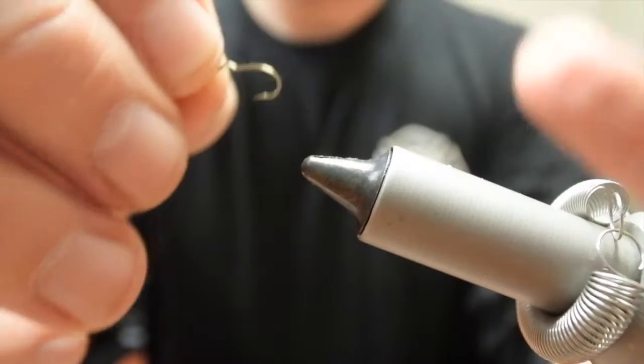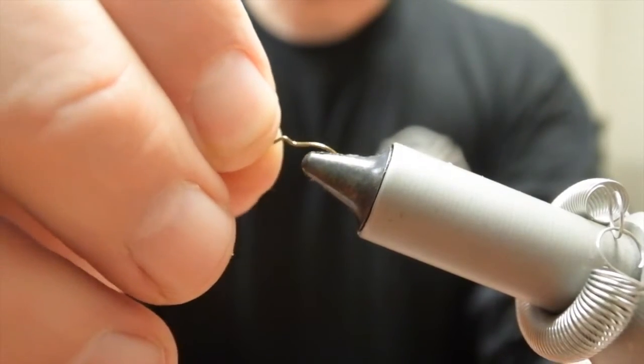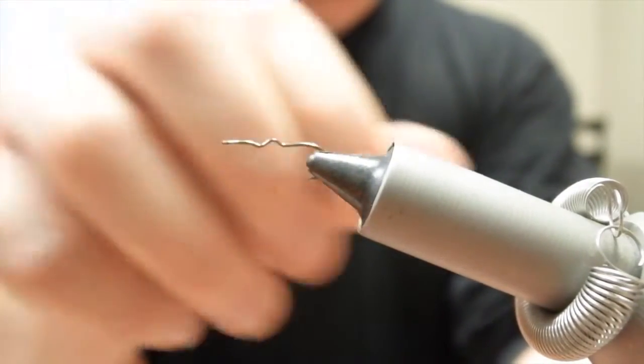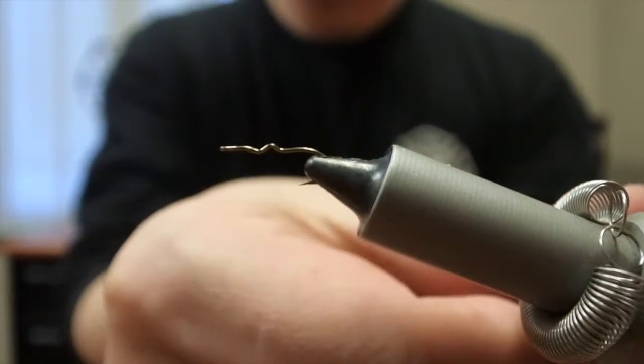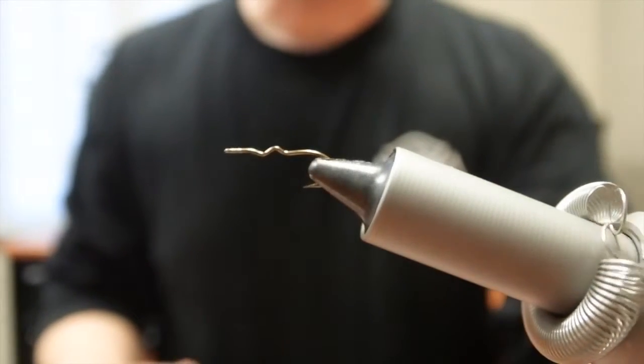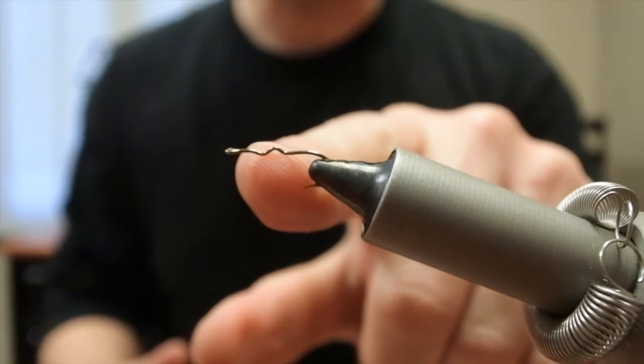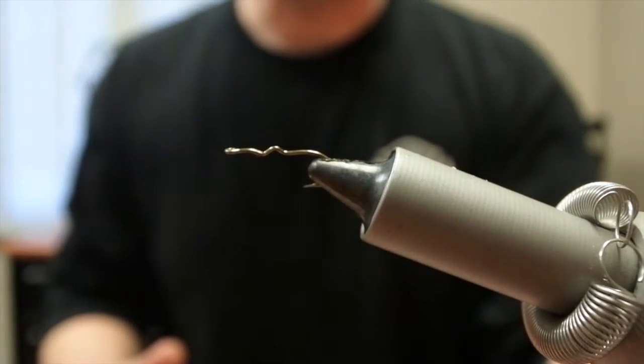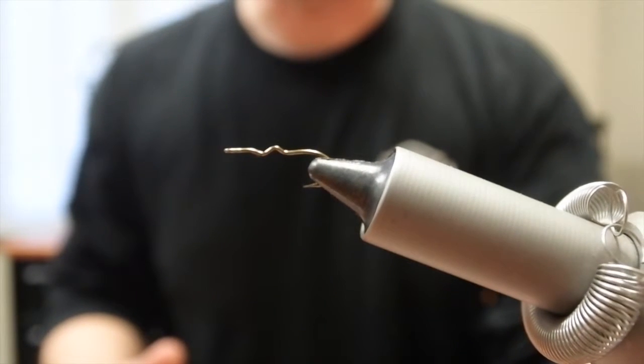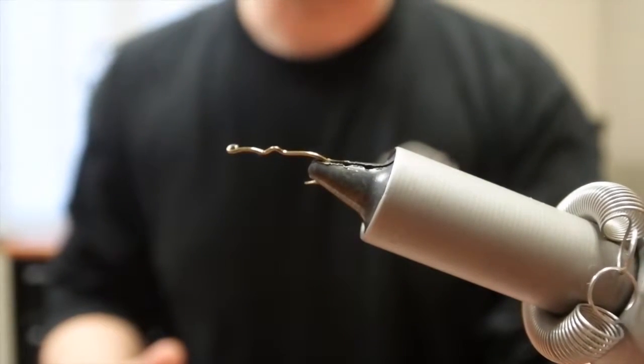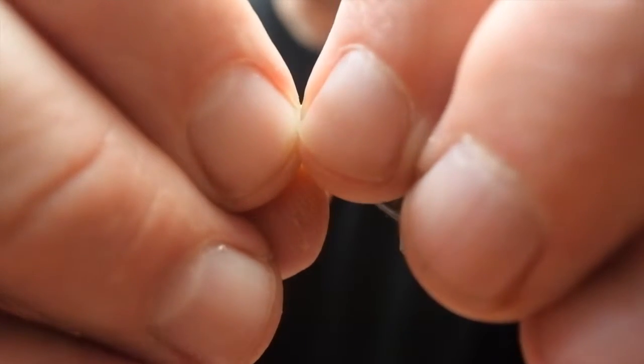I like to press down the barb. Makes it easier to get the hook off the fish. Now this is a size 12 kink shank. You can see the kink at the very top of the shank there. And that kink allows the foam body to sit nicely on the hook shank.